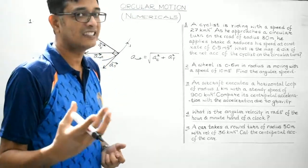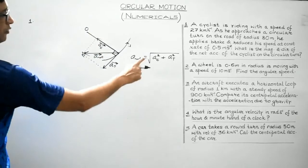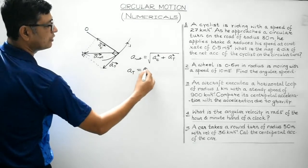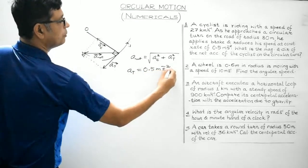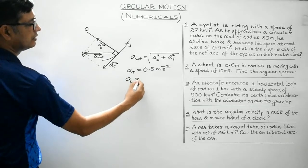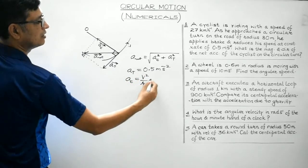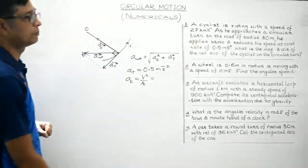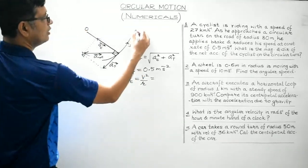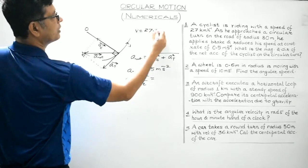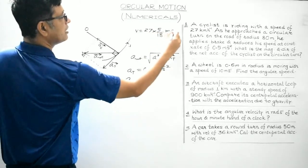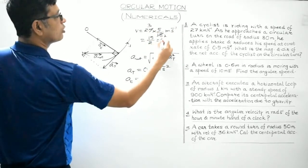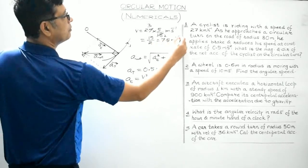To find the magnitude, we need AC and AT. The tangential acceleration AT is given to be 0.5 metres per second square. Now let's find AC. Centripetal acceleration is v² by r. The speed of the vehicle is 27 km per hour. Converting to metres per second: v = 27 × 5/18 = 7.5 metres per second.